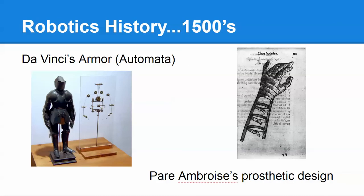Leonardo da Vinci took the automata to the next level. He created a metal-plated warrior — a suit of armor with gears and pulleys inside. The suit could sit up, move its arms, move its head, and raise its visor via those pulleys and gears. This invention, created to entertain da Vinci's dinner guests, inspired automata that followed and was definitely ahead of its day in terms of engineering genius.